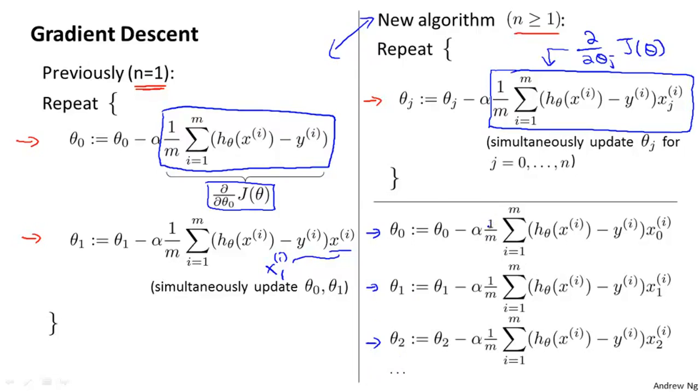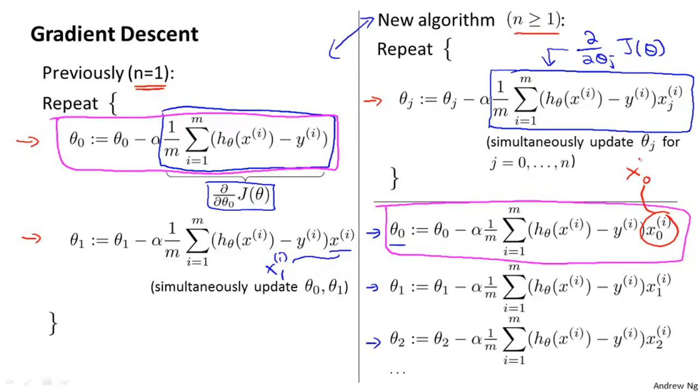If you look at the update rule for theta 0, what you find is that this update rule here is the same as the update rule that we had previously for the case of n equals 1. And the reason that they're equivalent is because in our notational convention, we had this x0 equals 1 convention, which is why these two terms that I've drawn the magenta boxes around are equivalent.